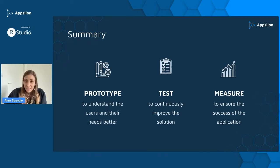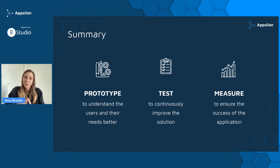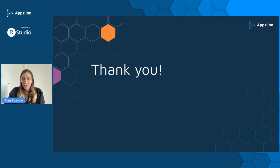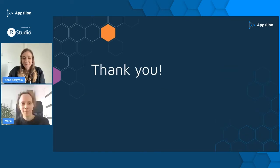To summarize: remember the three pillars of user-centric apps — prototyping to understand users and their needs better, testing to continuously improve your application, and measure to ensure its success. Thank you. Thank you so much, Anja — it was great. When you were talking about not inviting management to meetings, I thought of a few situations. A manager always asks people who work with him: "I created this beautiful dashboard, are you going to use it?" — and of course everyone would answer yes.